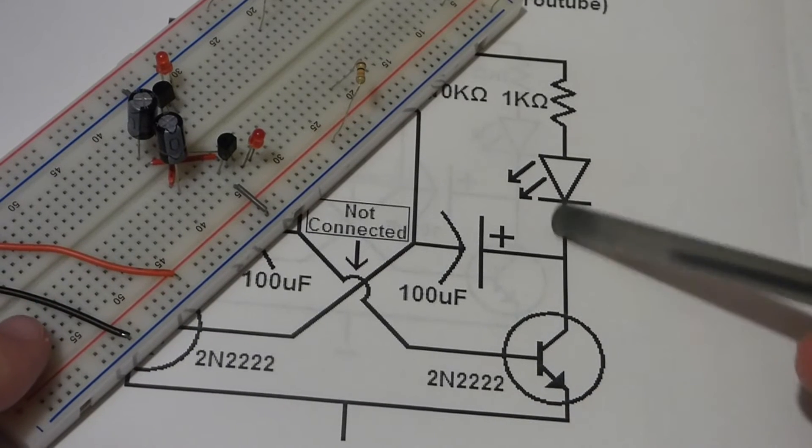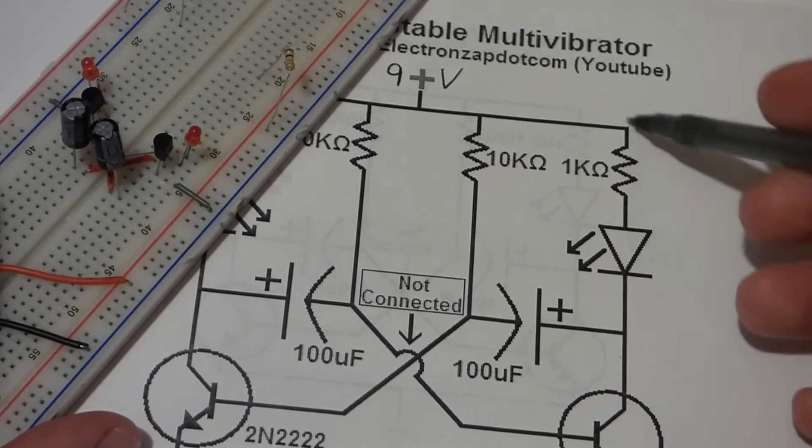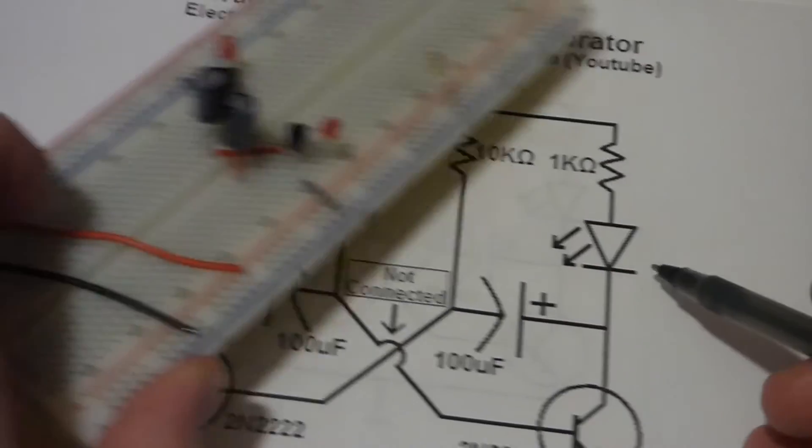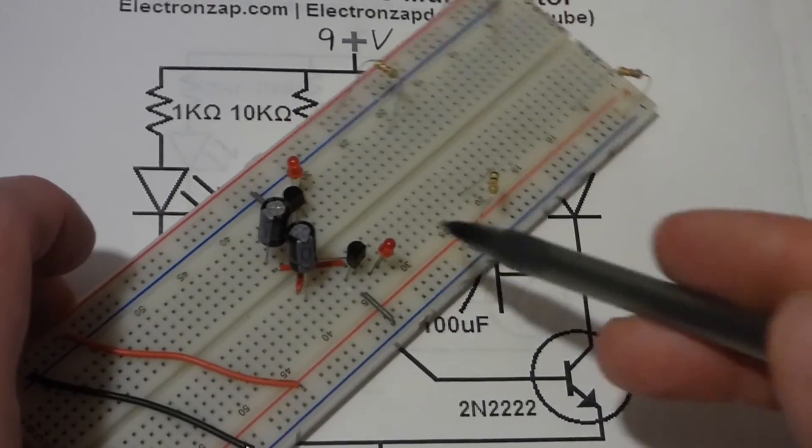That's because this is the cathode here. This needs to be more negative to conduct. And up here is the anode, the long lead. That needs to be more positive to conduct. And I already inserted the other one over there in the same way.